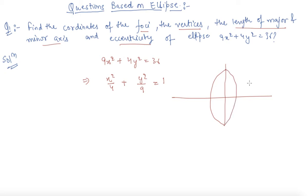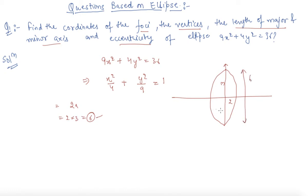This length is 3 and this length is 2. The major axis in this case is 2a, so the length of the major axis will be 2 × 3 = 6. The minor axis will be 2b, which is 2 × 2 = 4.